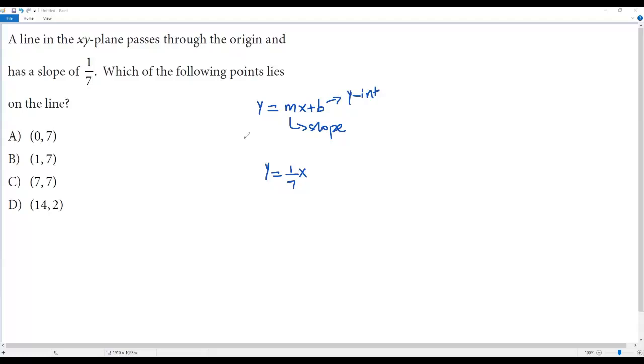What is the y-intercept? The question says the line passes through the origin, which means the y-intercept is 0. So the value of b is 0.